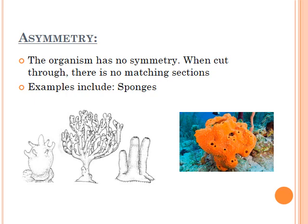The final type is asymmetry. With asymmetry, the organism has no symmetry at all when cut through — there's no matching section no matter how you cut it. A great example of this in nature are sponges, and not your typical kitchen sponge — these are the actual sponges you can find in nature. As you can see, if you tried to cut this, there's almost no equal part or matching section you could get. Asymmetry simply means no symmetry at all.